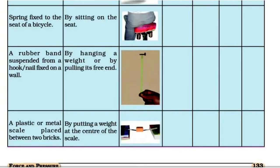Second case: a spring is fixed to the seat of a bicycle. The spring is the object. By sitting on the seat, we apply force on the spring. Does it change its state of motion? No. It changes its shape.